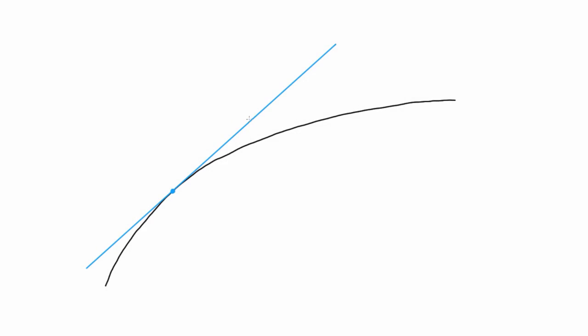In calculus, you will often want to know the slope of a function at a given point. This is the same as finding the slope of the line tangent to the curve at that point.